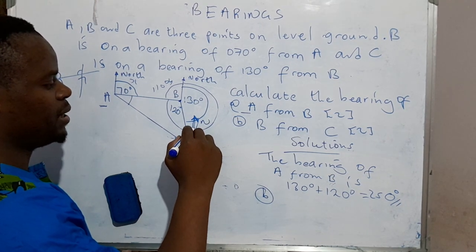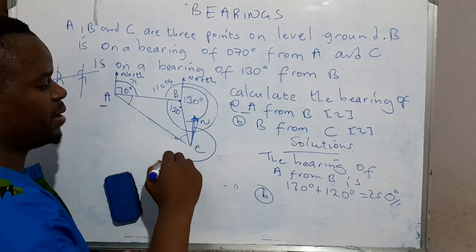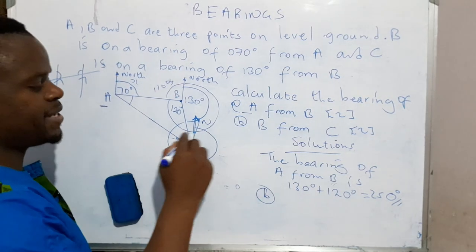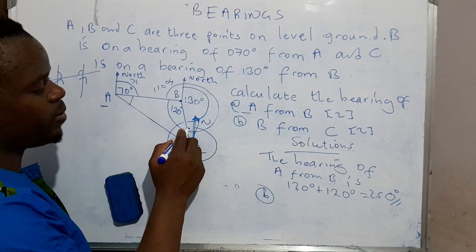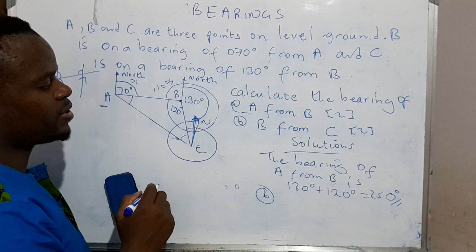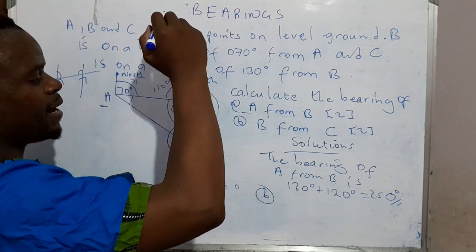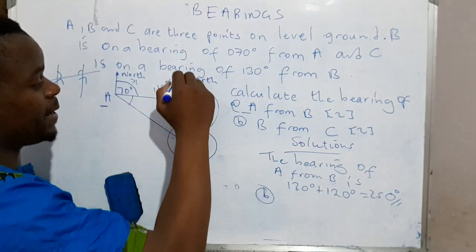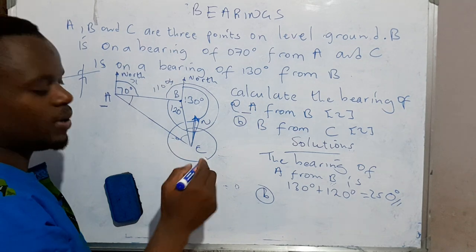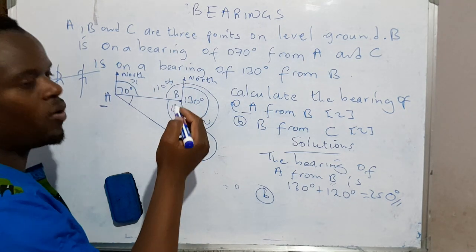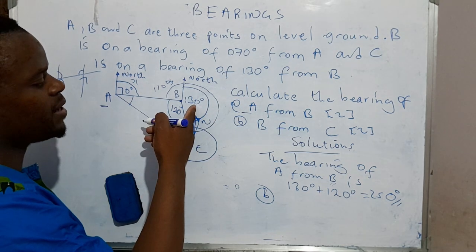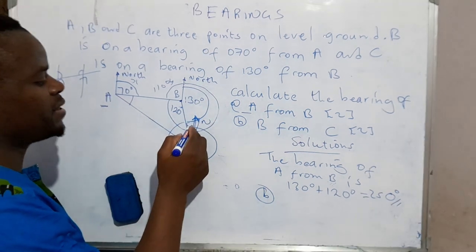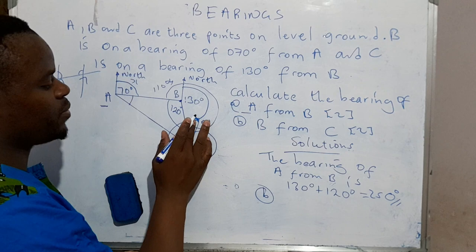Right. Then we need to know bearings are actually measured from the north and in a clockwise direction. So from C to B, it's from here to there. This angle here, what is the size of the angle? So first of all, we need to determine the angle on the inside here. So this line and that line are parallel to each other. This line here and that one. So now this angle and this angle are allied angles, meaning that they add up to 180.